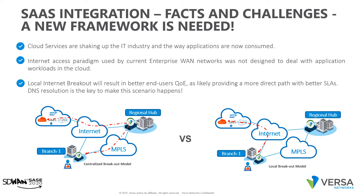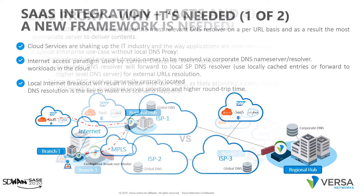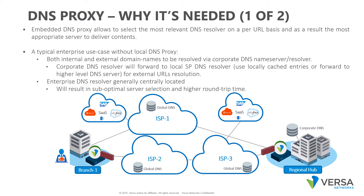We would also like to highlight the fact that DNS resolution is the key to making this scenario happen. DNS resolution will be the one dictating the path for the subsequent HTTP flows, and from which content will be served. DNS resolution will then return a list of IP addresses to the end user for sending the subsequent HTTPS flows in order to retrieve the content.